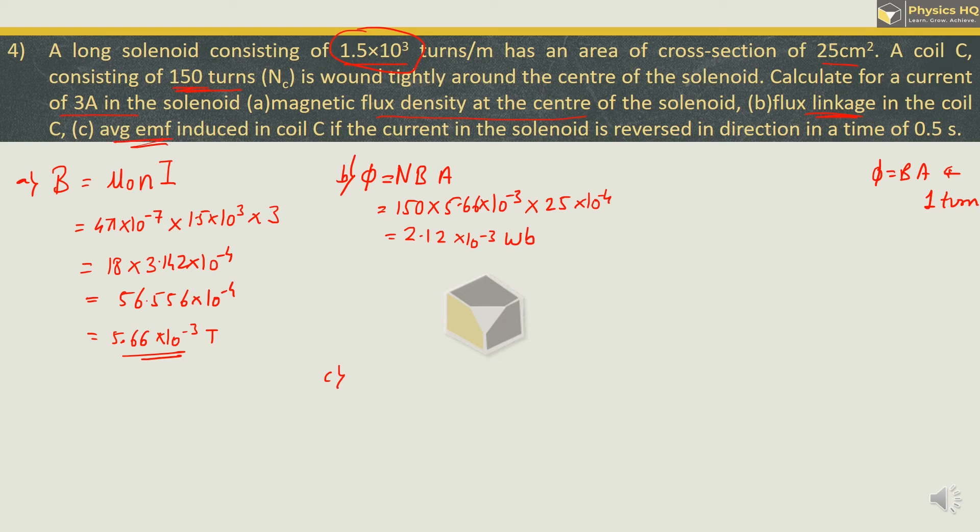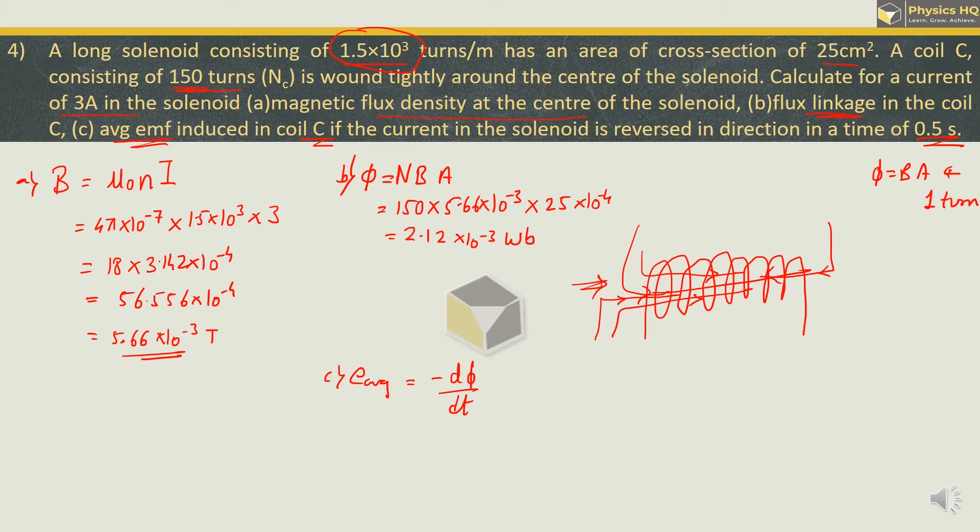Lastly they have asked average EMF induced in the coil C if the current in the solenoid is reversed in direction in a time of 0.5 seconds. So we will find E average by finding the change in flux per unit time. Now please try and understand, for a solenoid which is having lot many number of turns over here, if we reverse the direction of the current, then the direction of magnetic field or flux which is from this end, let us say, will also change. And we will have magnetic flux of the same magnitude from the other side.